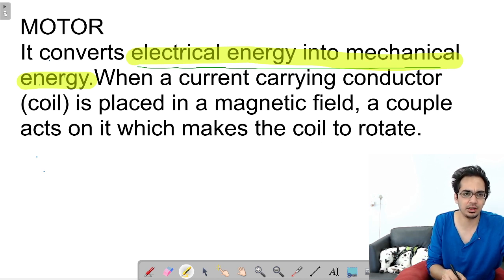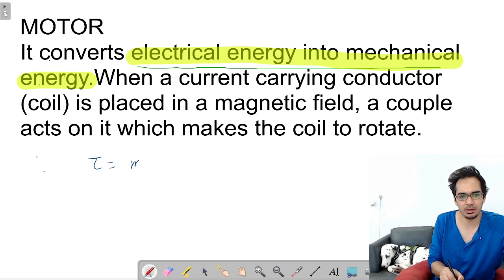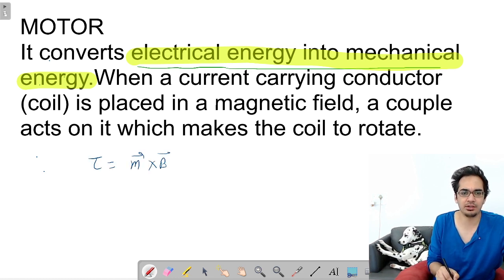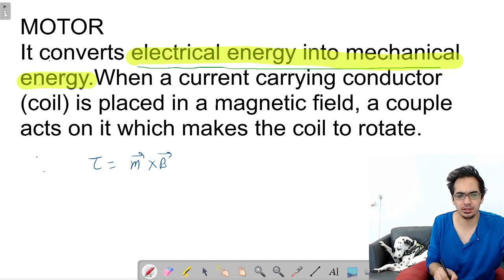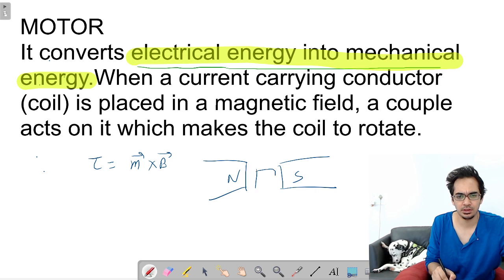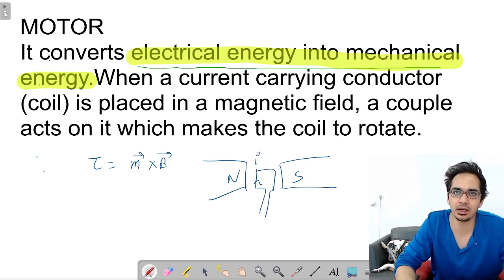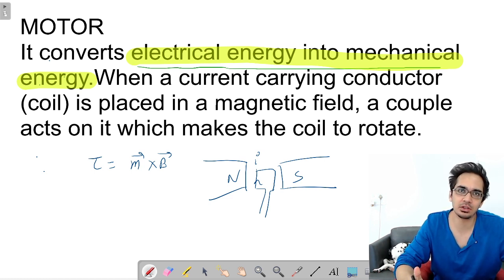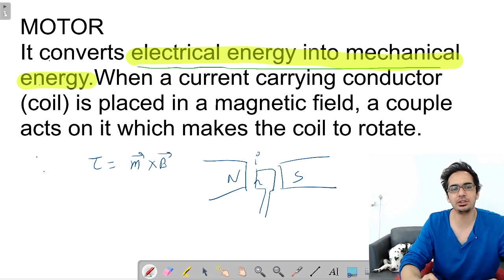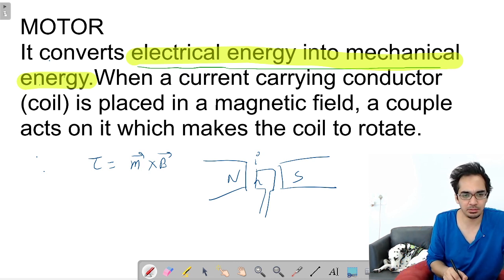Torque is equal to M cross B. Whenever there is a coil in a magnetic field — north pole and south pole — and if current is passed, it becomes a current carrying coil in a magnetic field which will experience a torque. Because of that torque the motor will start and the coil will start rotating. This is basically an electric motor which converts electric energy into mechanical energy. The concept is torque is equal to magnetic moment cross B.